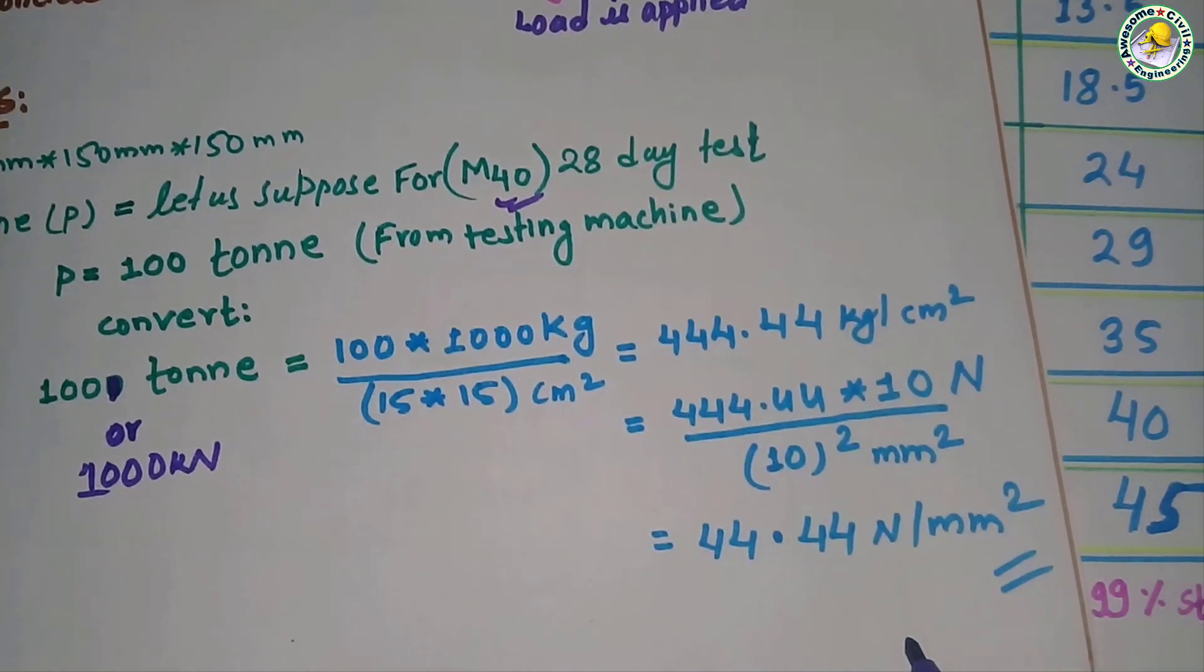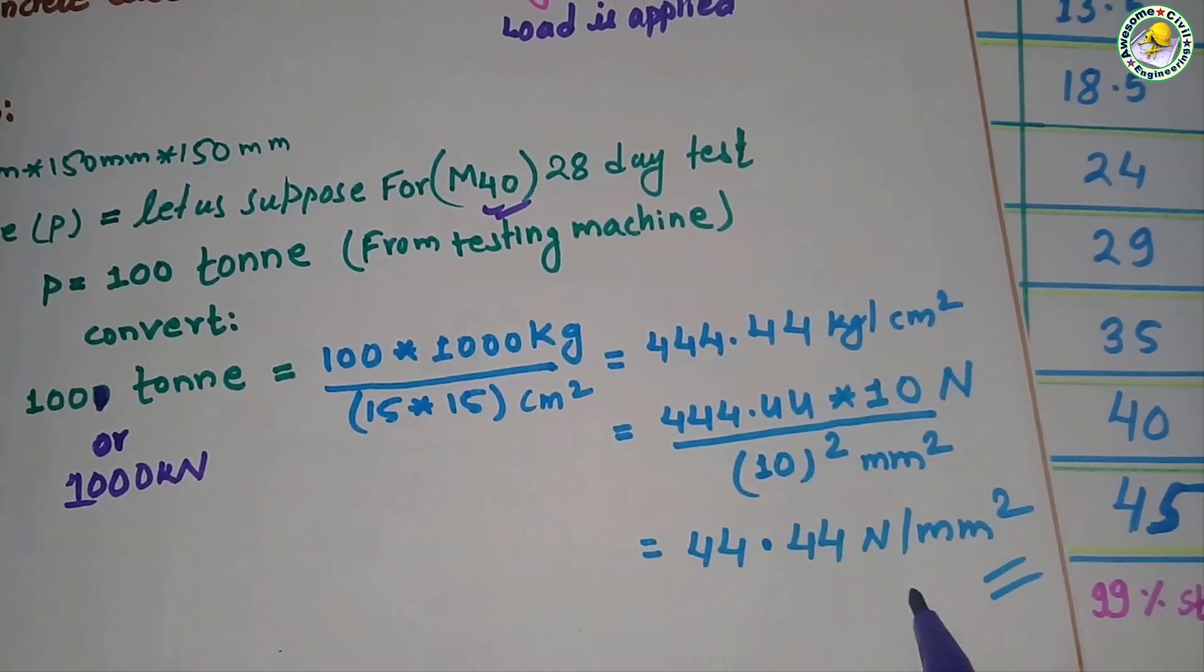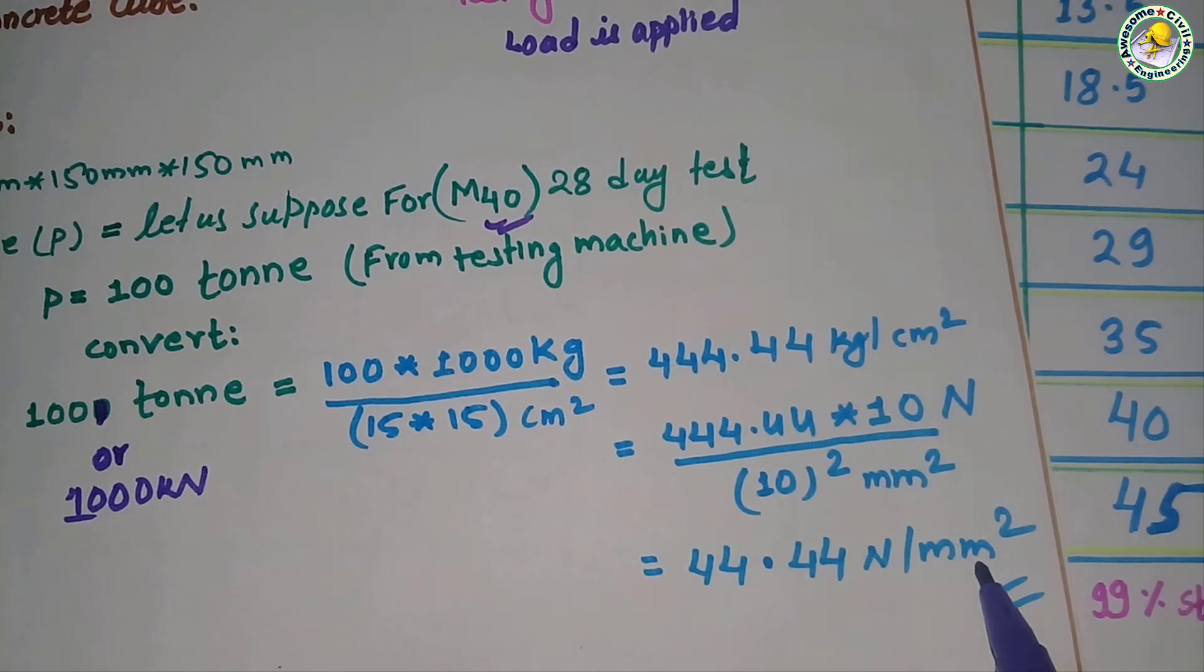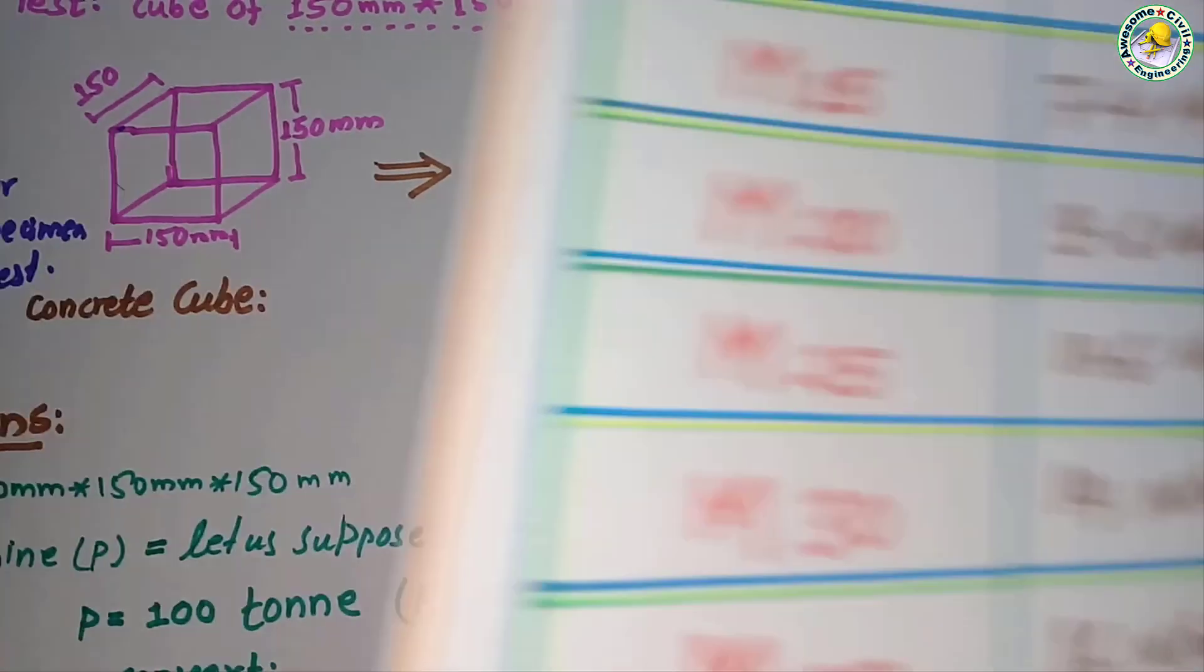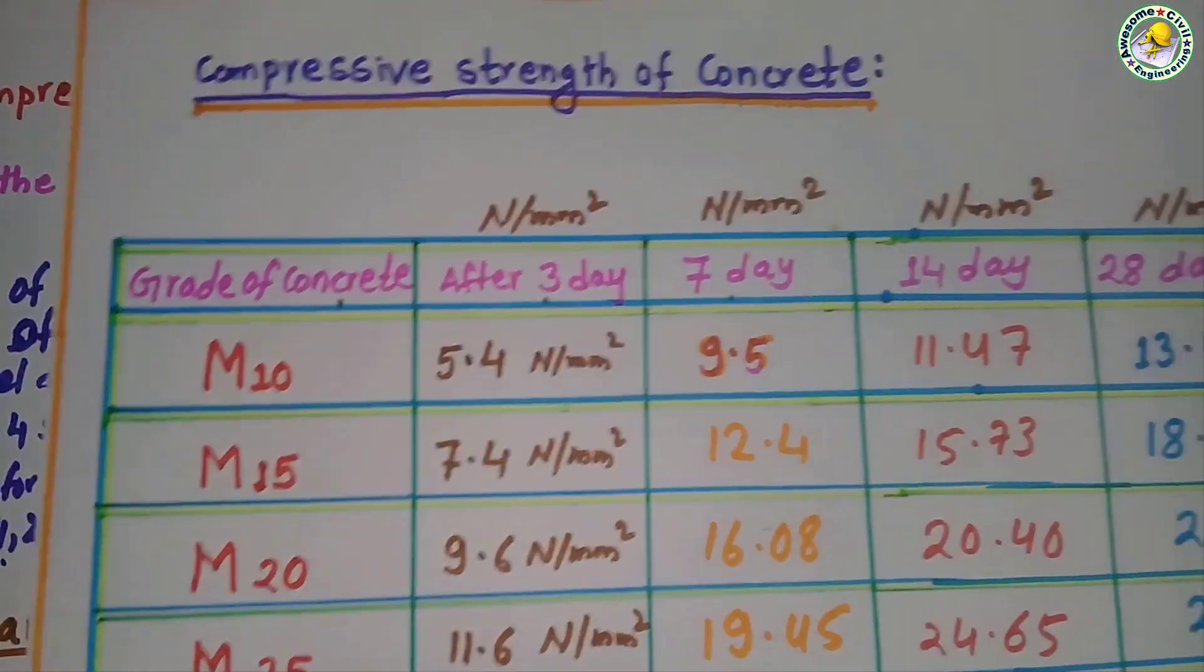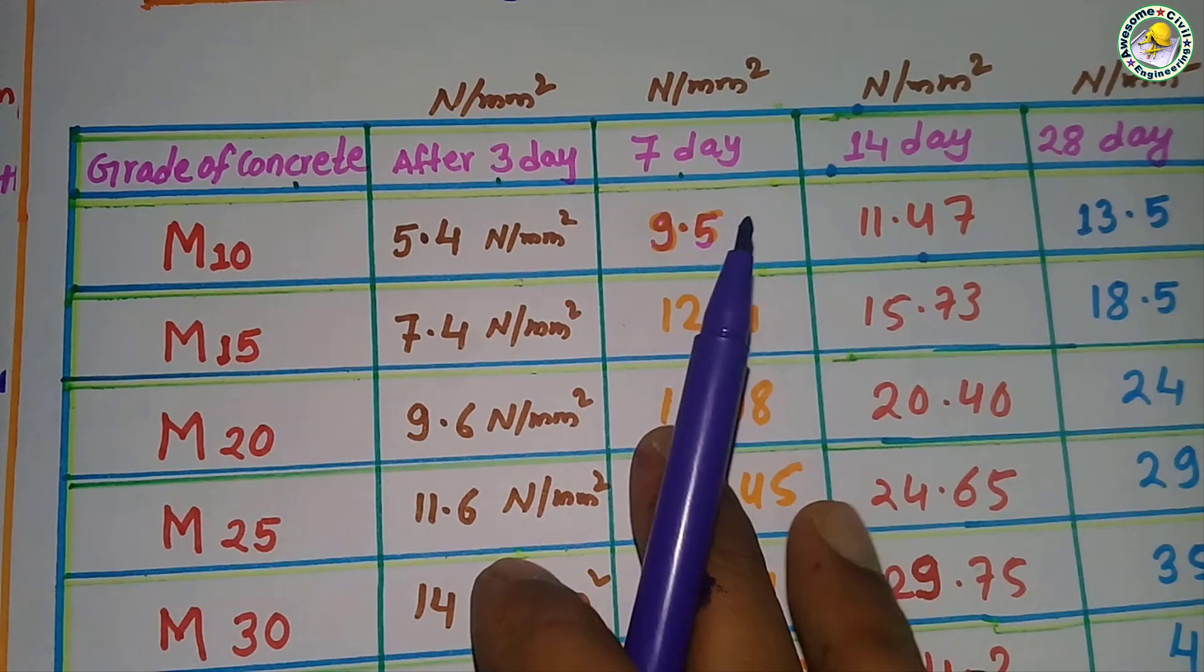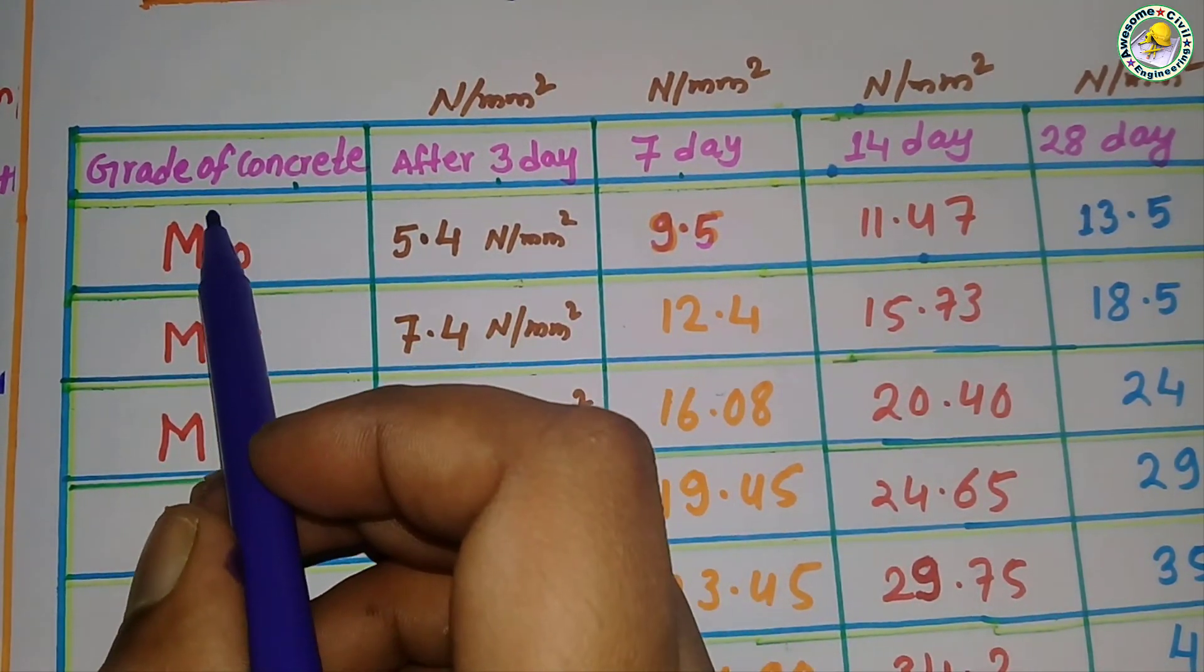Newton per meter square. As you can see from the table here - compressive strength of concrete table - grade of concrete.